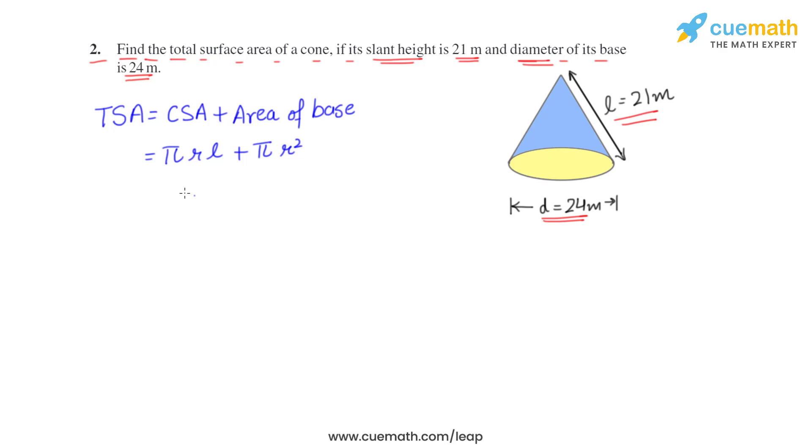We can factor out πr so it will be πr(l + r). So it means we have to first find the radius. The diameter is given so radius will be half of it.